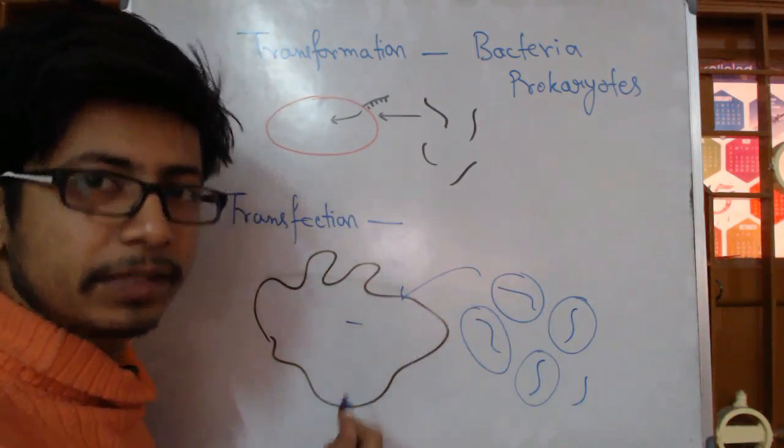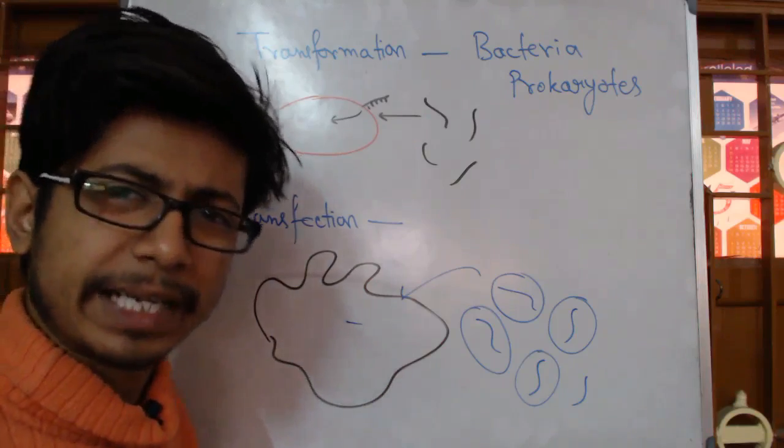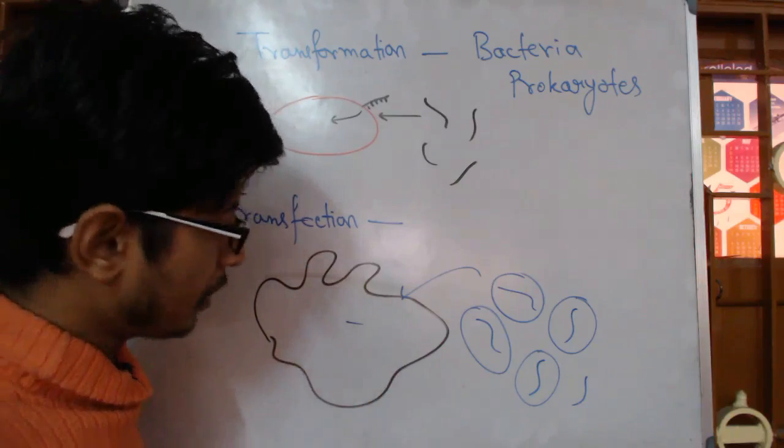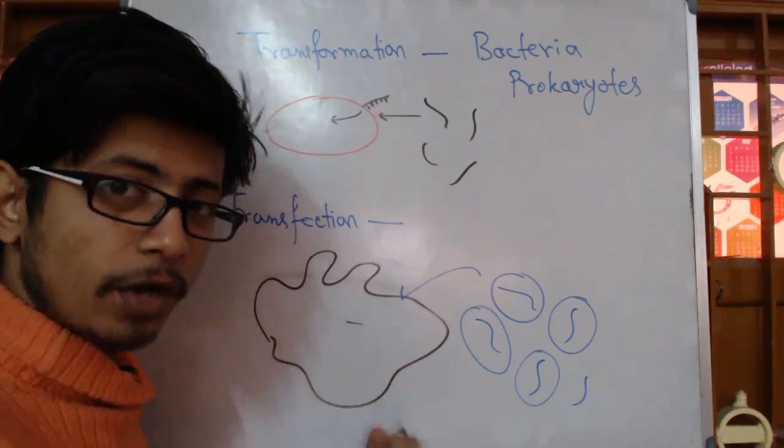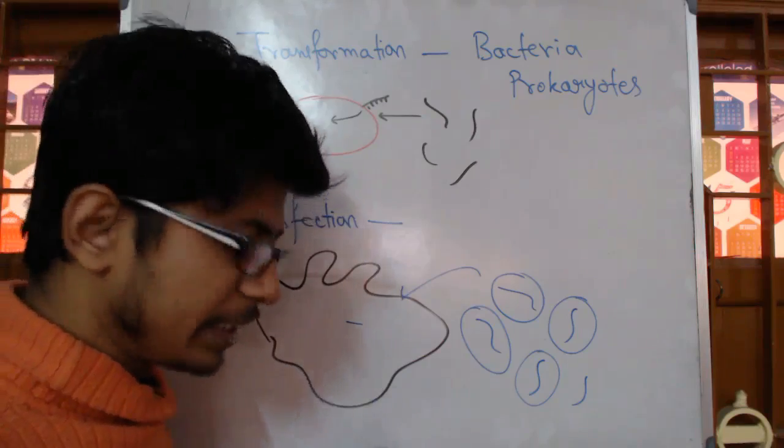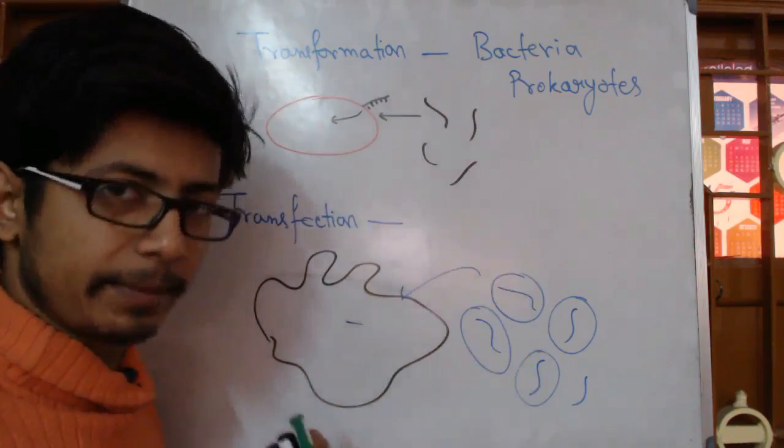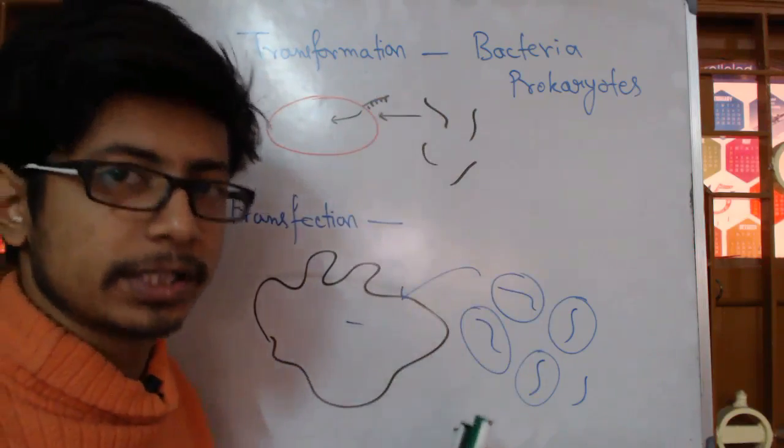Or if it's a vector, then we deliver the vector using different techniques that are out there, like microinjection, where we can directly insert the DNA inside the nucleus of the eukaryotic cell. Because you know the difference is the process - the idea is the same, but the difference is in their process.